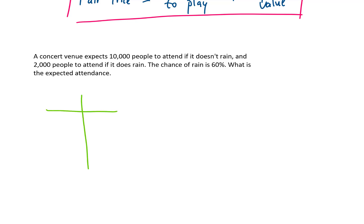So we could make a table for this. There are two possible outcomes. Either it rains or it doesn't. The probability of rain is said to be 60%, which we can write as .6. That means that the probability that it doesn't rain is .4 or 40%. The result if it rains is 2,000 people. And the result if it doesn't rain is 10,000 people.